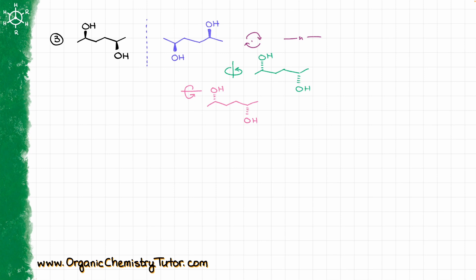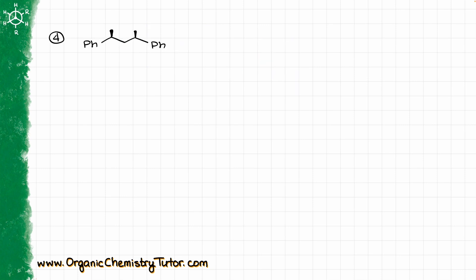And because these molecules are non-superimposable mirror images, that is going to make them a regular chiral molecule, and the relationship between the original one and the mirror image would be enantiomers.